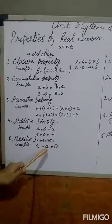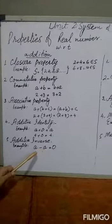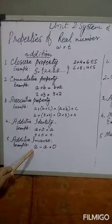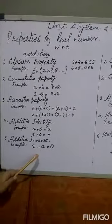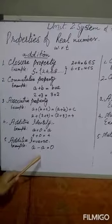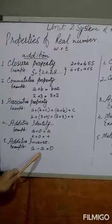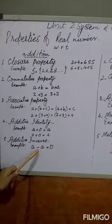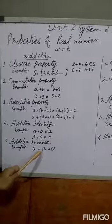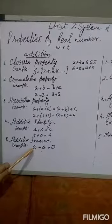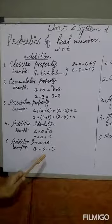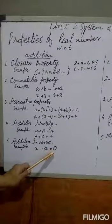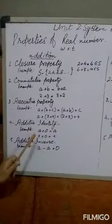The fifth property is additive inverse. For any real number A, minus A is the additive inverse of A — it has the opposite sign. For example, minus A is the additive inverse of A, and A is the additive inverse of minus A. Their sum is always zero.